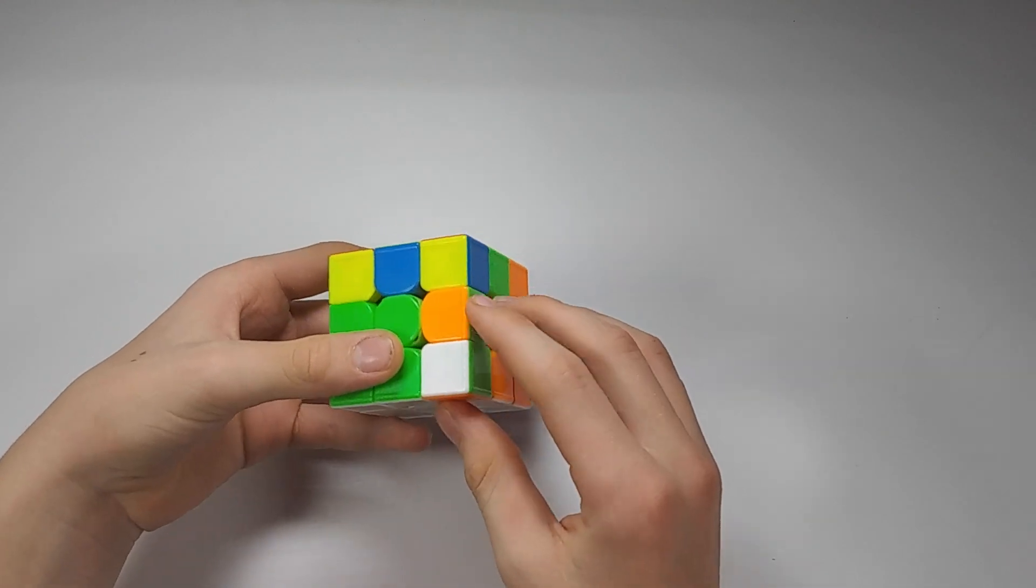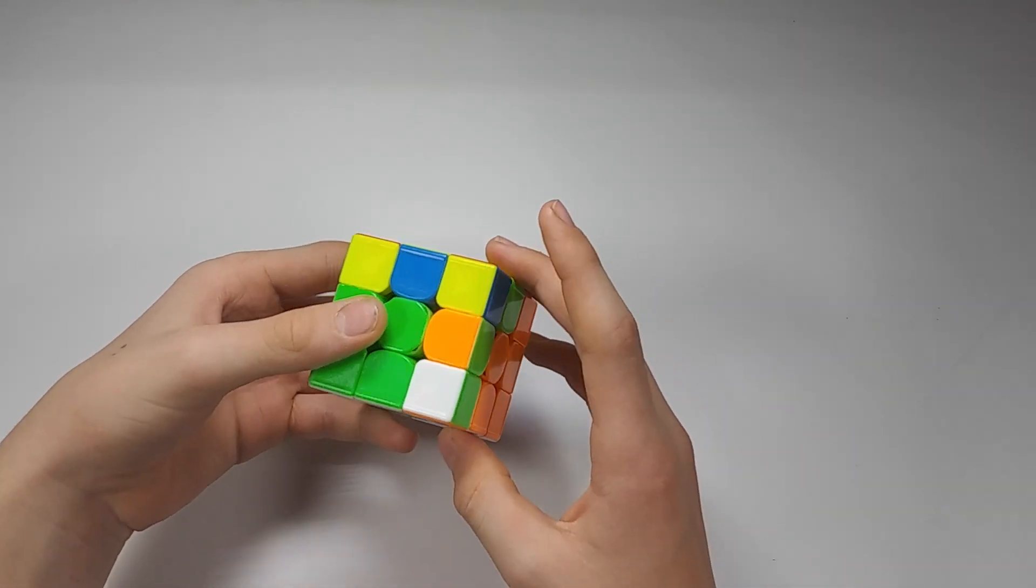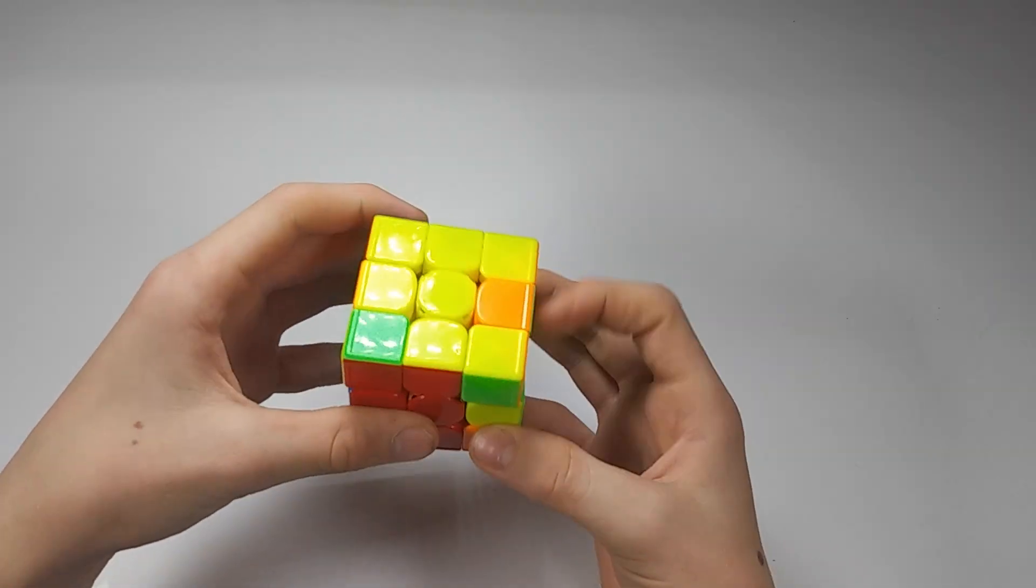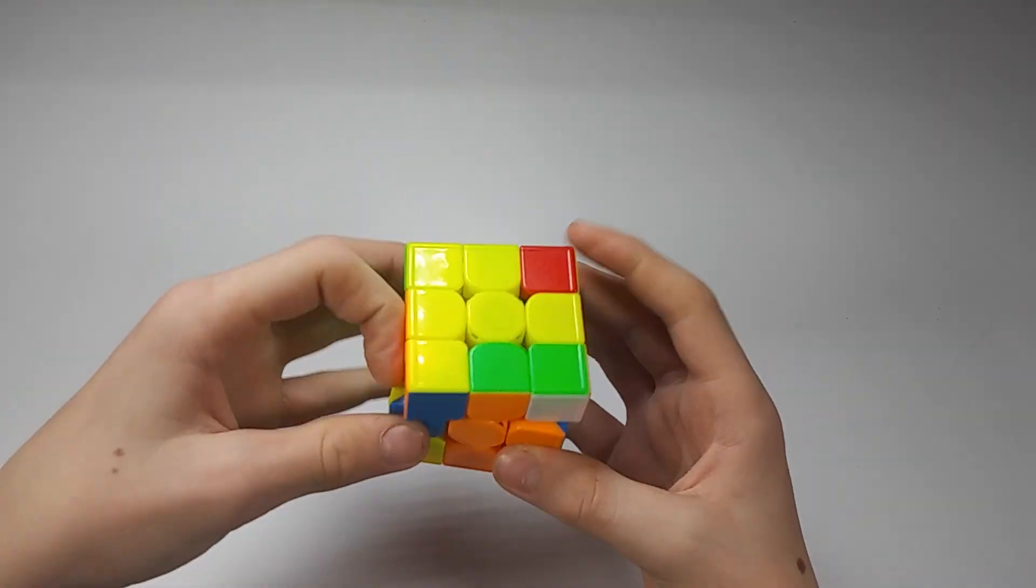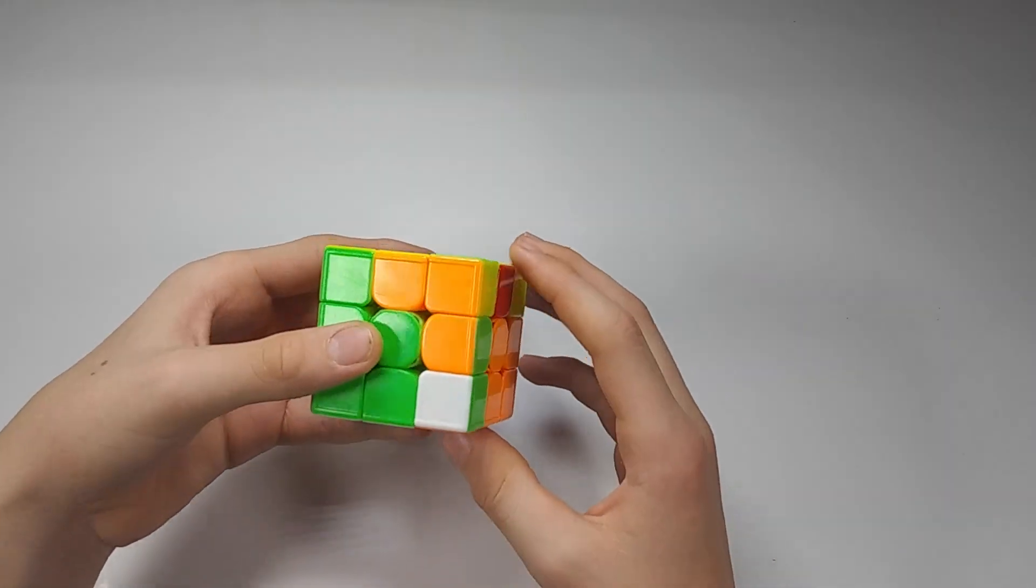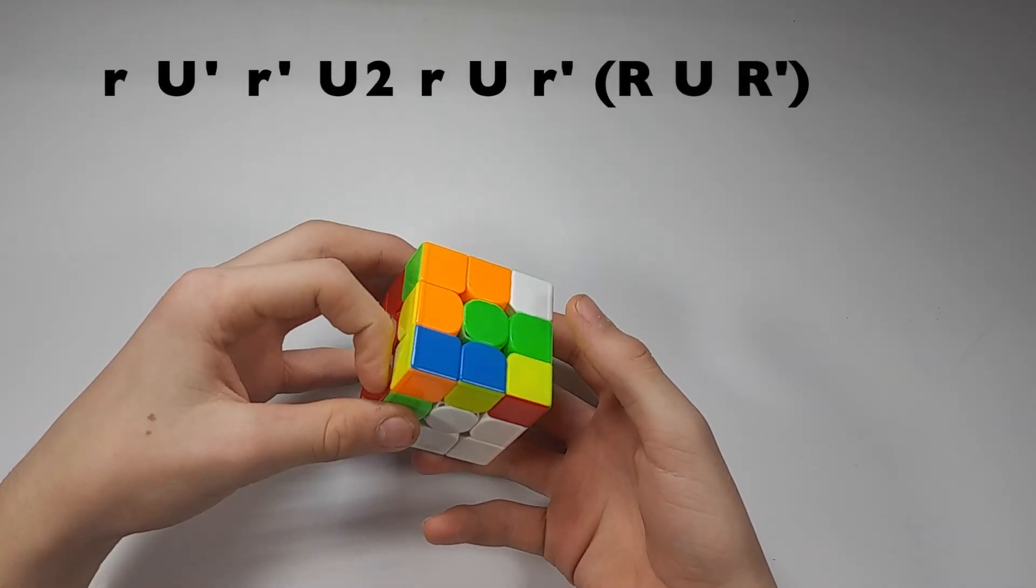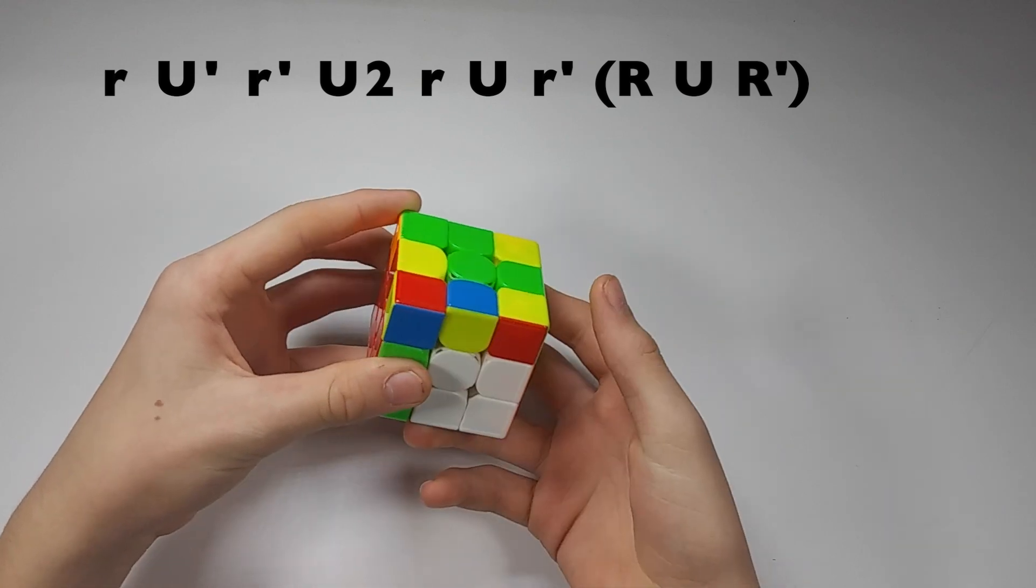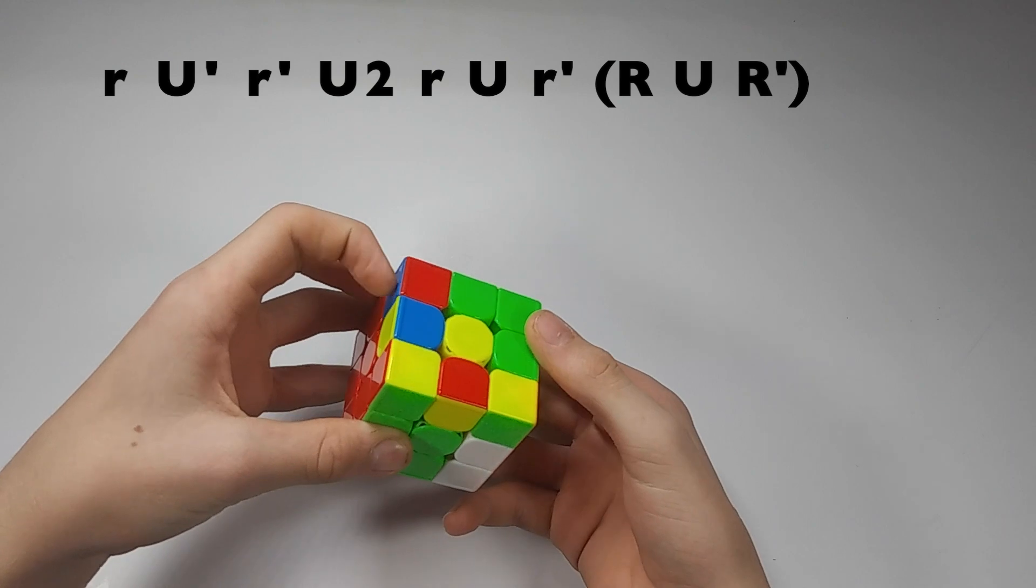You have this F2L case with the edge and corner inside the front right slot position like this. What you'd normally do is take it out, pair it up, or something along those lines. But what you can do instead is hold it just like this and then do wide R, U', wide R', U2, wide R, U, wide R', R, U, R'.